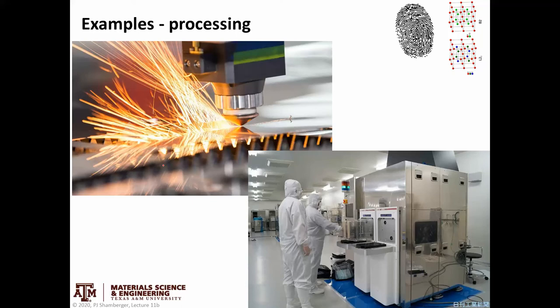Some quick examples: in processing — whether a classical metallurgy problem or a thin film semiconductor application — process conditions are very important because you could accidentally make phases you don't want, or make mostly a phase of interest but with a little bit of something else that throws off your material's properties. So it's very common to go back and check what crystalline phases are present, and you could also learn whether they're ordered or disordered and what the composition is, since composition is often related to lattice parameters.